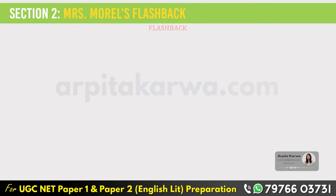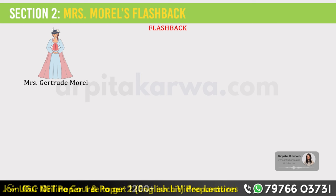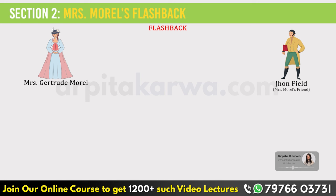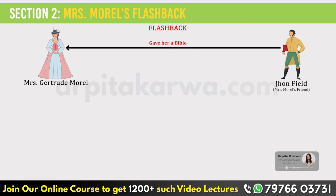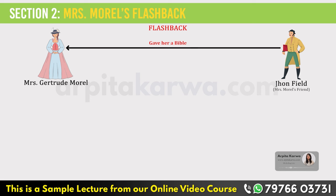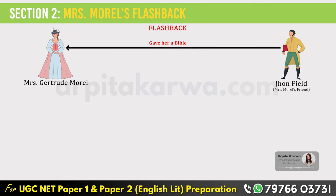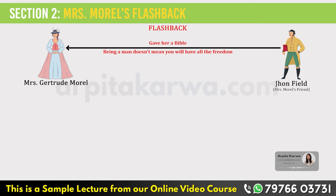The story then goes into a flashback that reveals Mrs. Morrill's life before marriage. She came from a poor family and had a close friend named John Field. When Mrs. Morrill was 19, John gave her a Bible as a gift, which she has cherished and kept safe all these years. She used to tell John that if she were a man, she could go and do whatever she wanted. However, John wisely replied that just being a man isn't enough to guarantee freedom — being a man doesn't mean you have all the freedom.